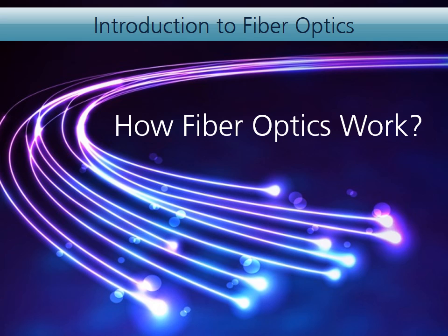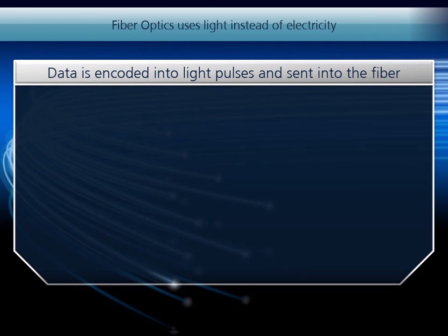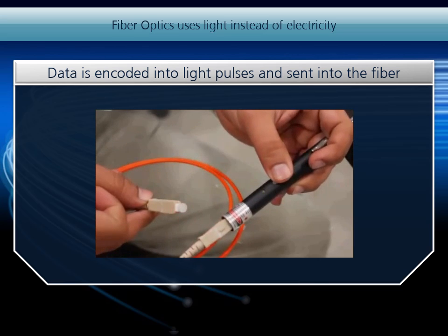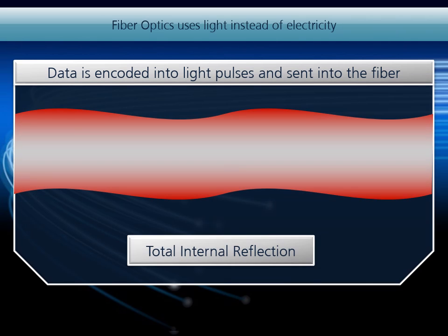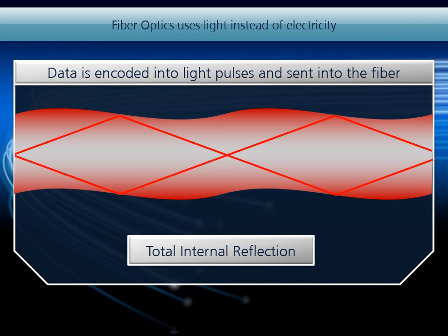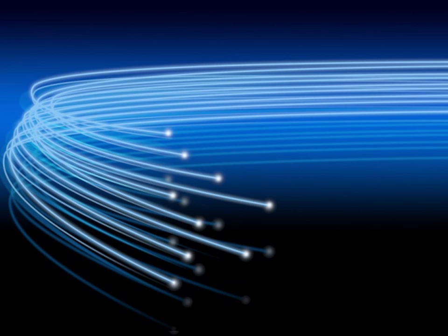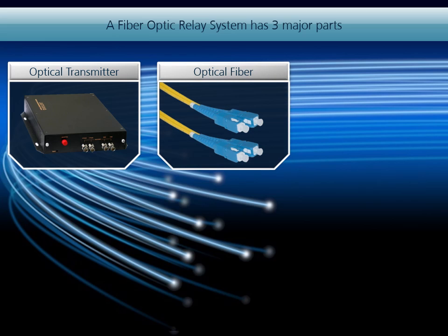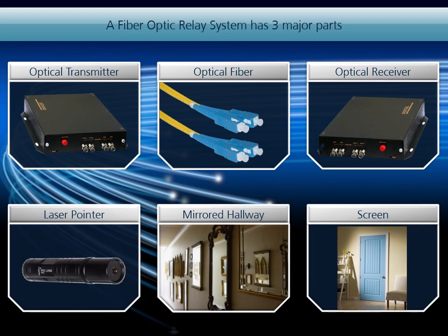Fiber optics is a tremendously powerful yet simple technology. Instead of electricity, fiber uses pulses of light to transfer data. The digital signal is encoded into light pulses and sent into the fiber. A phenomenon called total internal reflection keeps the light trapped inside of the core as it travels through the cable. A fiber optic relay system is made up of three major parts: an optical transmitter encodes and produces the light signals, the optical fiber conducts the light signal over a distance, and an optical receiver accepts and decodes the signals. It's a little like kids playing spy — if one had a laser pointer, he could flash a message off a mirror in the hall, around the corner, and onto a door for his friend to see.